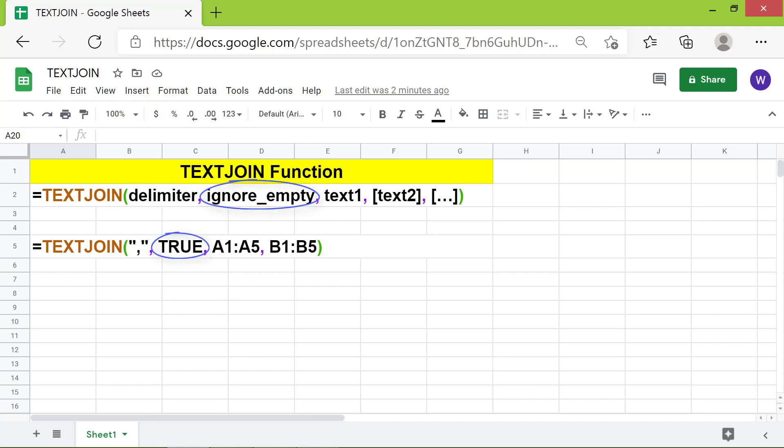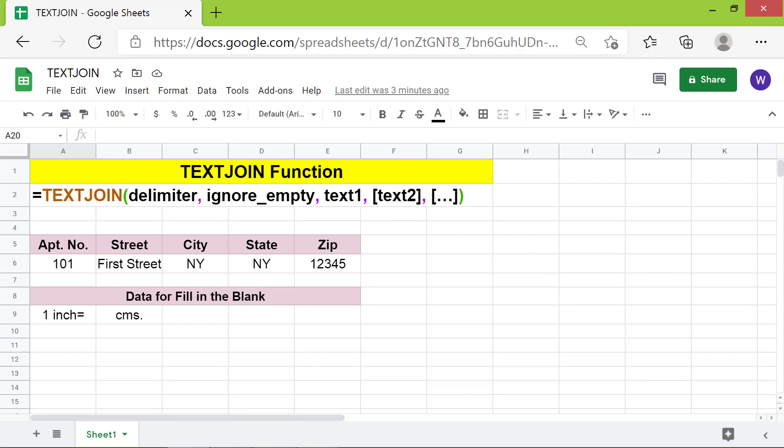Ignore empty is either true or false. If true, the function ignores empty cells in a range. If false, the function does not ignore empty cells. Text one can be a single value, range, or an array. Text two is optional and is a single value, range, or an array which immediately follows the delimiter.